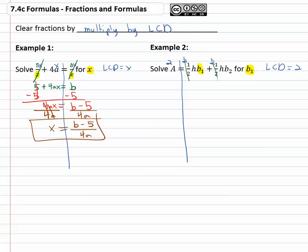When we do, the 2's divide out, and we're left with 2A equals hb1 plus hb2.